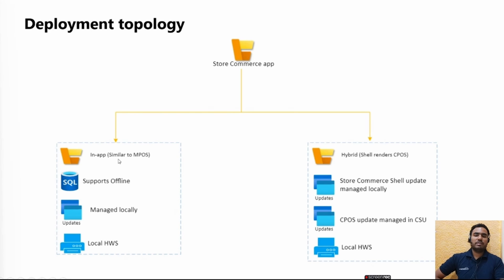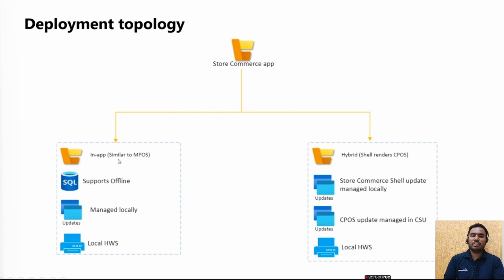Now we go to deployment topology. There are two main concepts: in-app mode and hybrid mode. The Store Commerce App brings features of both Modern POS and Cloud POS. Modern POS (MPOS) supports offline and local hardware station, while Cloud POS (CPOS) doesn't support offline or local hardware station, but provides benefits like seamless centralized updates. Both have pros and cons, and Store Commerce App brings you both sets of benefits.